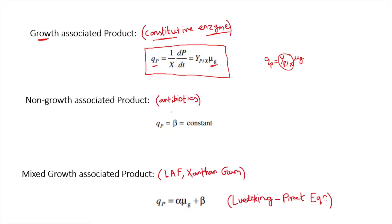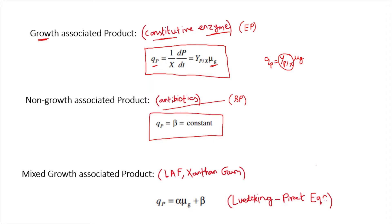There are non-growth associated products like antibiotics, which mostly form in the stationary phase, while growth associated products mostly form in the exponential phase. In non-growth associated product formation, there is no direct relationship between product production and the growth rate of the bacterial cells. The product production rate Qp equals a constant beta, because it is not dependent on the growth rate.